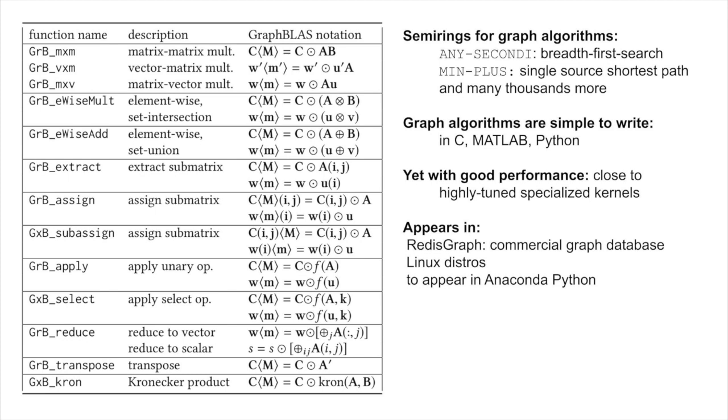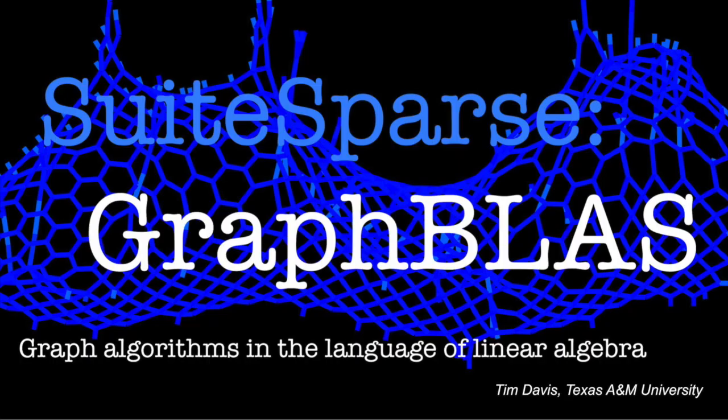High-level packages such as MATLAB and the BLAS have transformed high-performance matrix computations. The GraphBLAS vision is to create a groundbreaking transformative shift in how graph algorithms are expressed as linear algebraic operations over semi-rings applied to sparse adjacency matrices, giving us a powerful high-level abstraction in which we can easily write complicated graph algorithms while at the same time achieving a high level of performance.